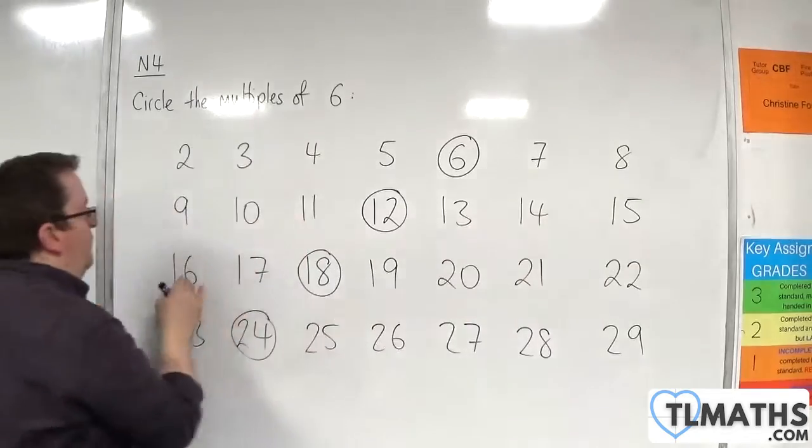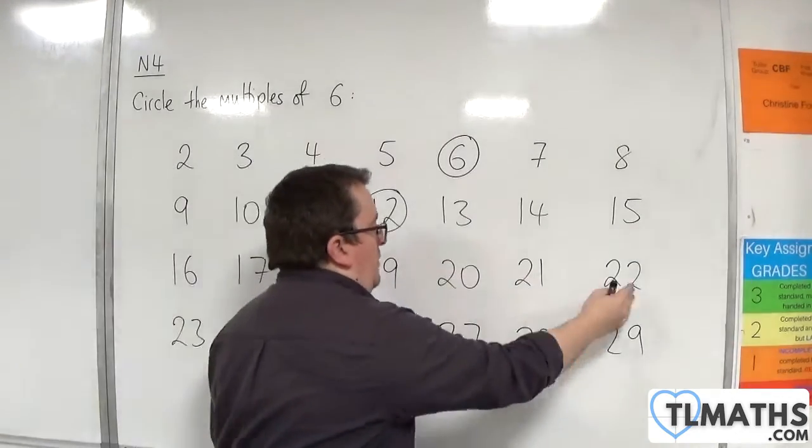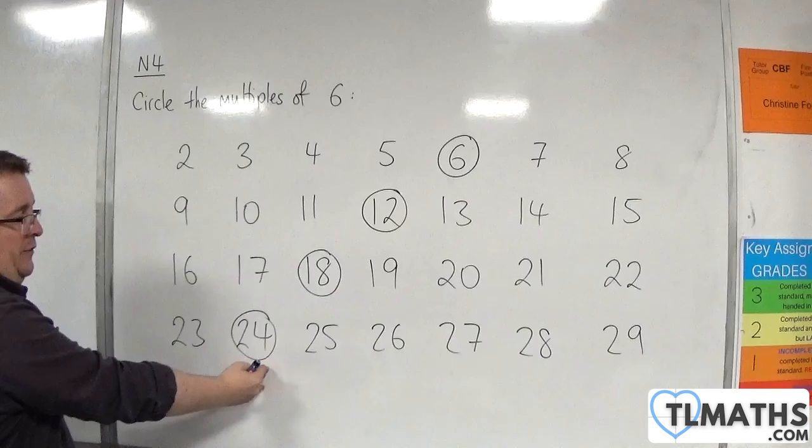1, 2, 3, 4, 5, 6. There's another one. 1, 2, 3, 4, 5, 6. There's another one.